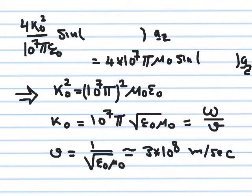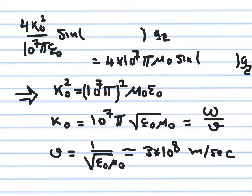One over √(μ_naught ε_naught) is actually the velocity of the electromagnetic wave — approximately 3 × 10^8 meters per second in free space. So ω, the angular frequency multiplying time, and k_naught multiplying y (the direction of wave propagation), are not independent — they are related through this formula, where 1/v is the constant of proportionality between them.